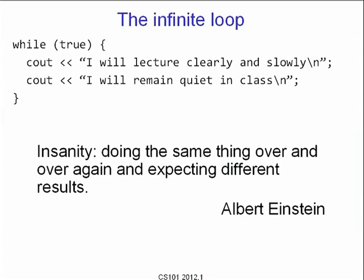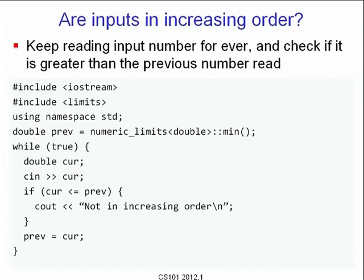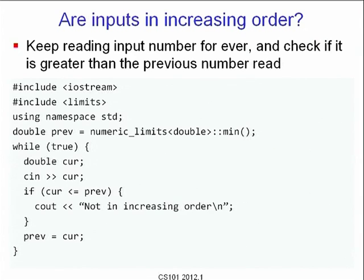Instead, we will change something in the body of the loop. Here is a slightly more sophisticated loop: keep reading input numbers forever and check if each number is greater than the previous one. The logic is to remember the previous value in 'prev' and read the current value in 'curr', compare prev and curr, and at the end of each iteration overwrite prev with curr. It is enough to remember just the last value.